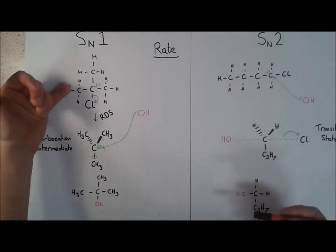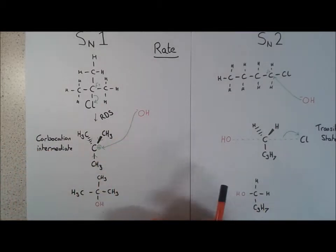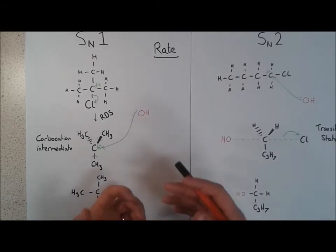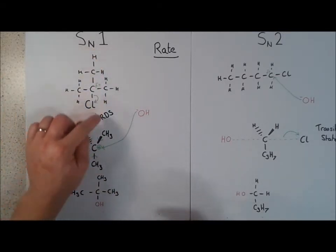So if we increase the concentration of the halogenoalkane, there will be an effect on rate. But if we increase the concentration of the nucleophile, in this case the OH-, it will have no effect whatsoever. So we say there is one molecule involved in the rate determining step.